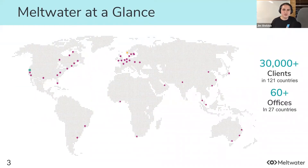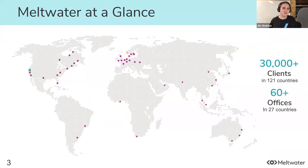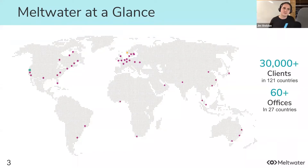Meltwater is a global company with over 30,000 clients in 121 countries and over 60 offices in 27 countries. From the engineering side, that's about 300 employees across roughly 30 offices. It's a global organization with the usual challenges around time zones and communication, but also the exciting opportunity to work with people from all over the world.